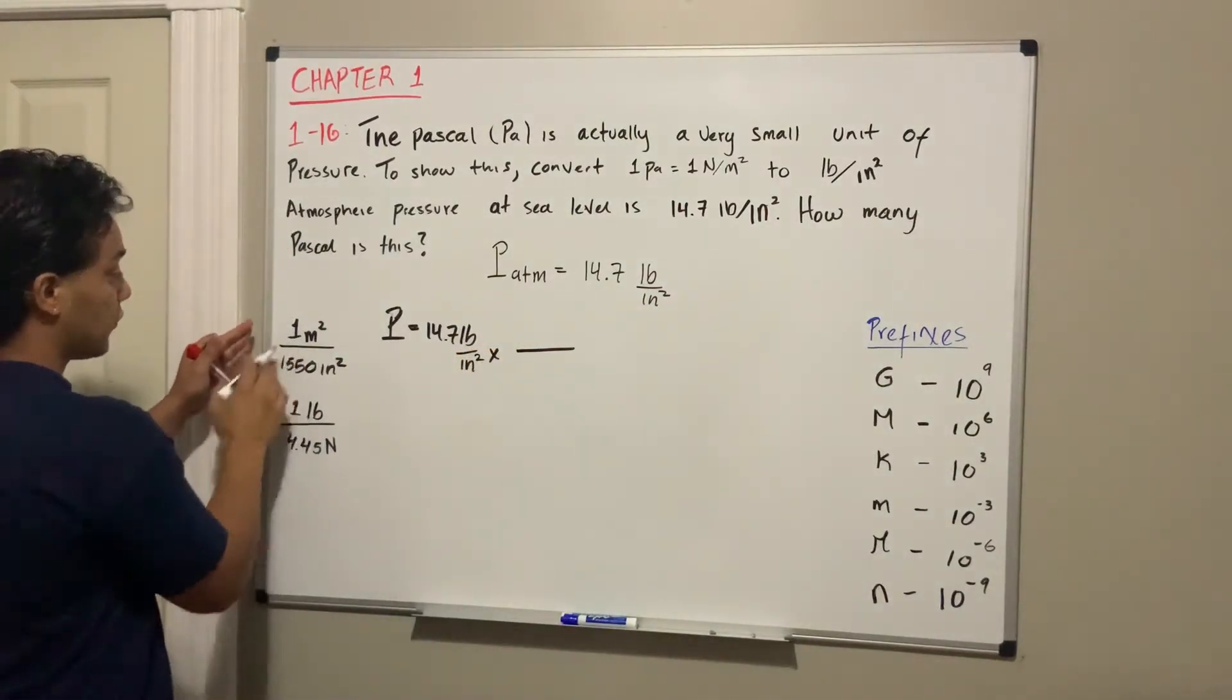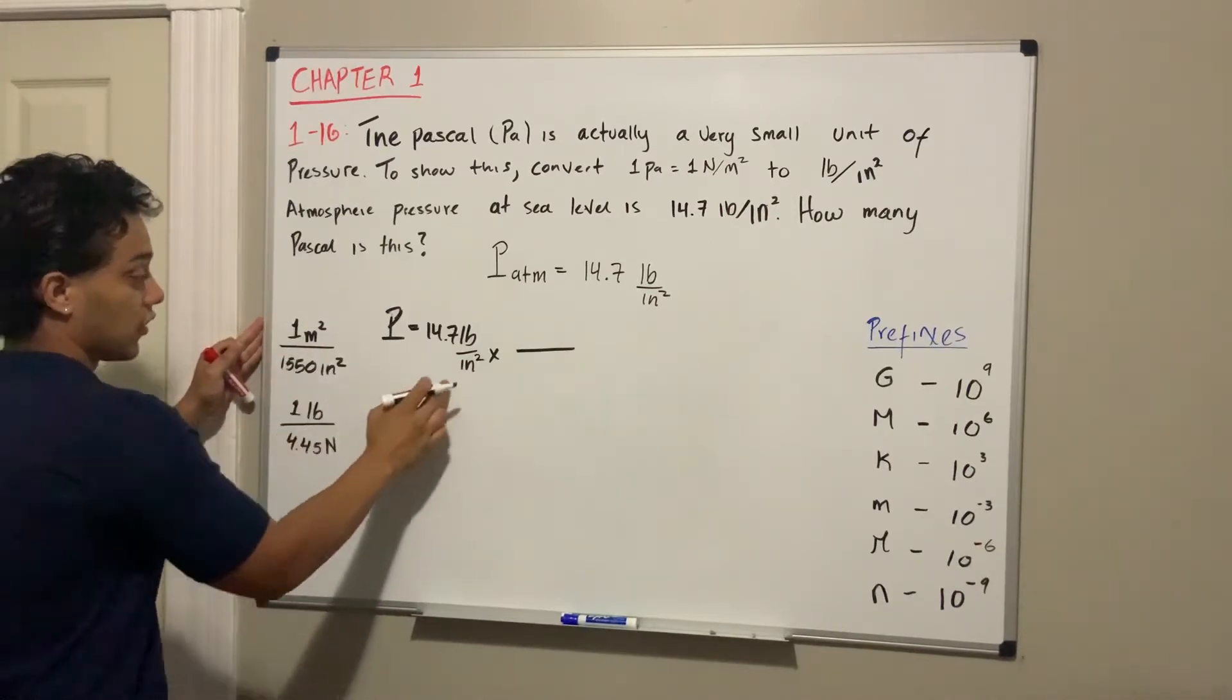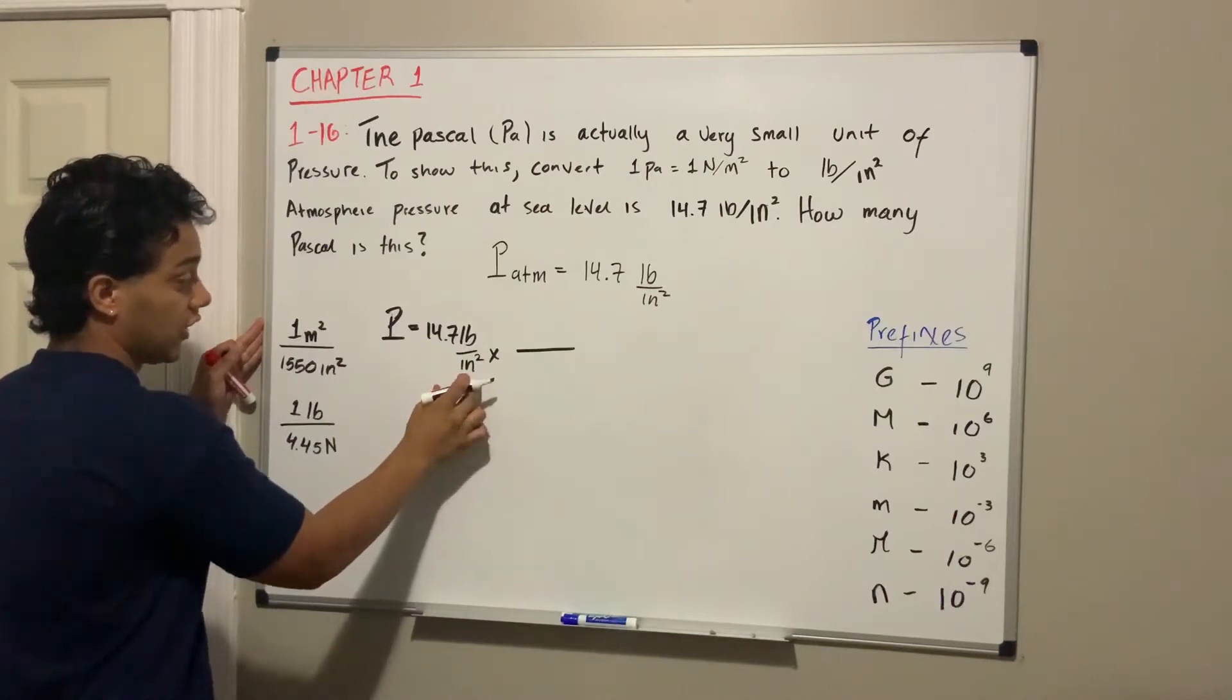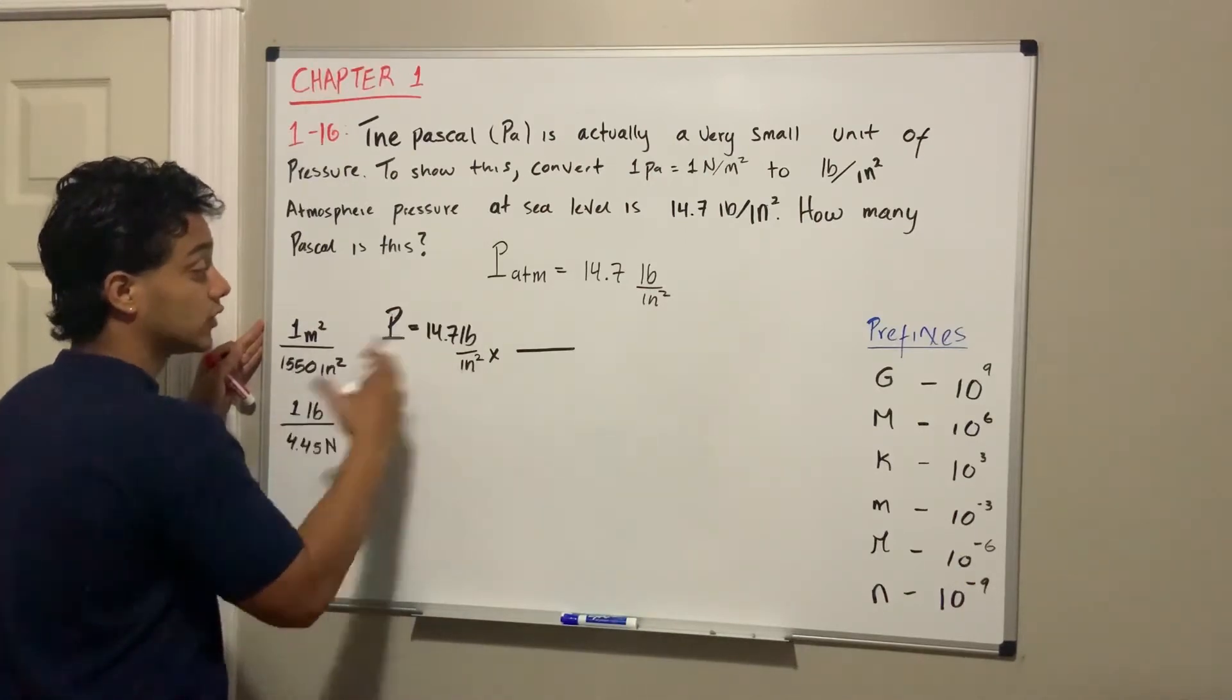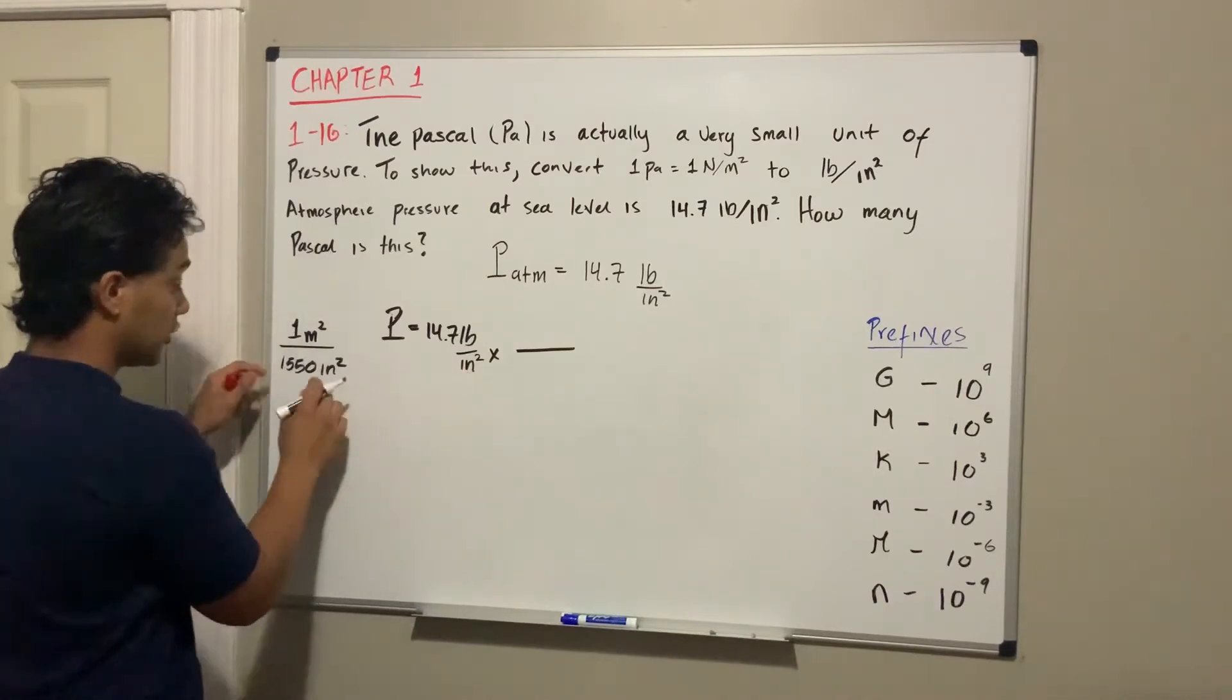How do I know how to use these conversion factors? Let's start with meters squared and inches squared. If we look at the conversion, the units I want to convert—inches squared—are on the bottom, so I'm going to put the inches squared on top.